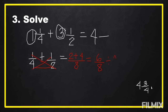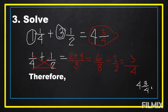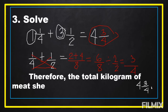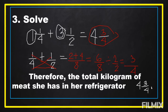Six and eight are both divisible by two. Six divided by two equals three, and eight divided by two equals four. So our fraction is three-fourths. Combined with the whole number four, our final answer is four and three-fourths. Therefore, the total kilograms of meat she has in her refrigerator is four and three-fourths.